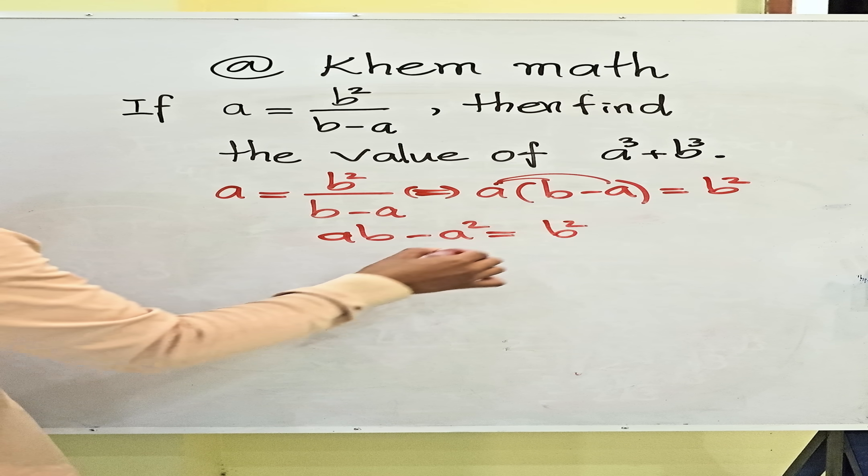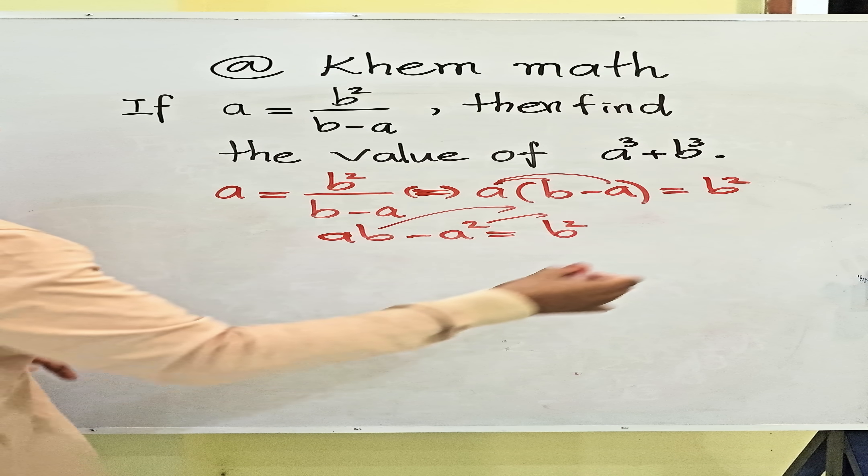And expand it. So, we get ab minus a squared equals b squared. So, now we change it all to the right hand side. So, we get a squared minus ab plus b squared equals 0.